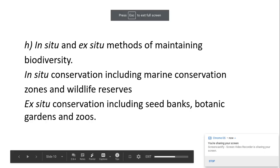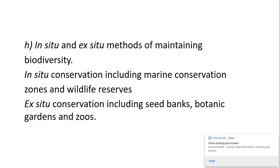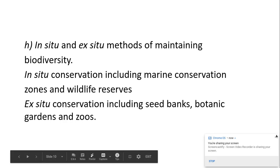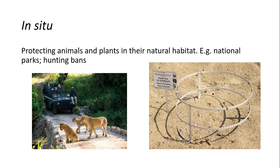Hello biologists, today we are looking at specification point H from biodiversity for A-level Biology OCR. This is taken from 4.2.1 on biodiversity. In specification point H we're looking at in-situ and ex-situ methods of maintaining biodiversity. There are a couple of examples of each that we need to know, and we also need to know the advantages and disadvantages of using ex-situ and in-situ conservation.